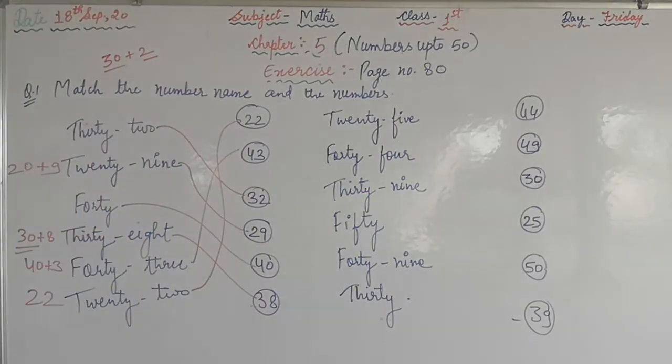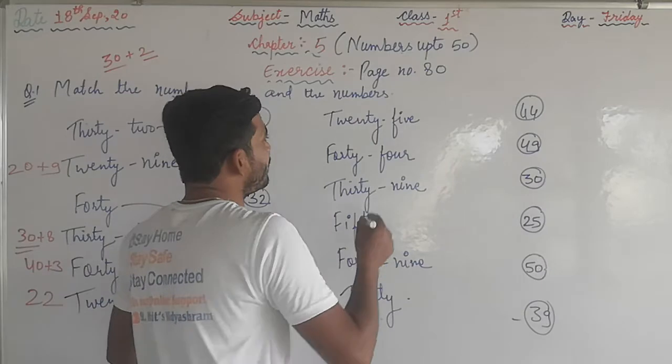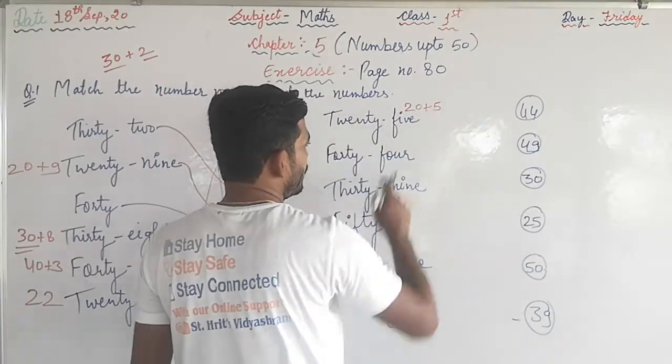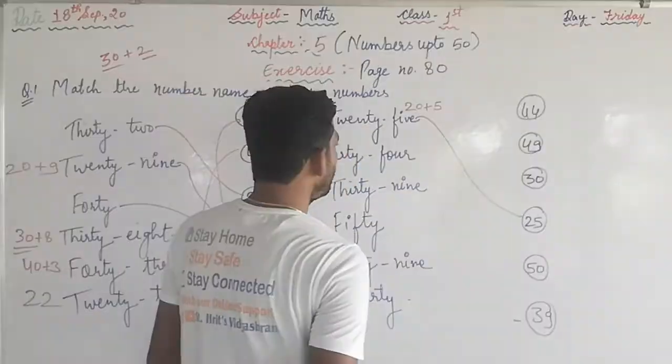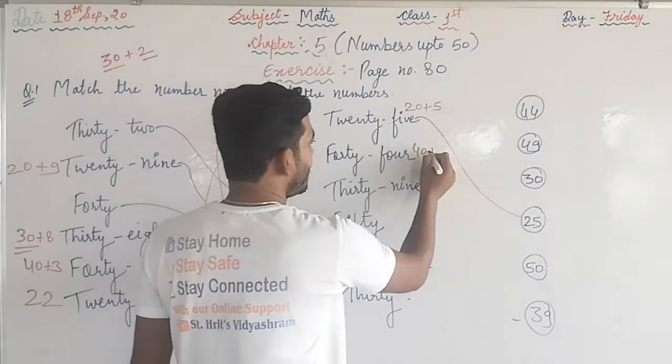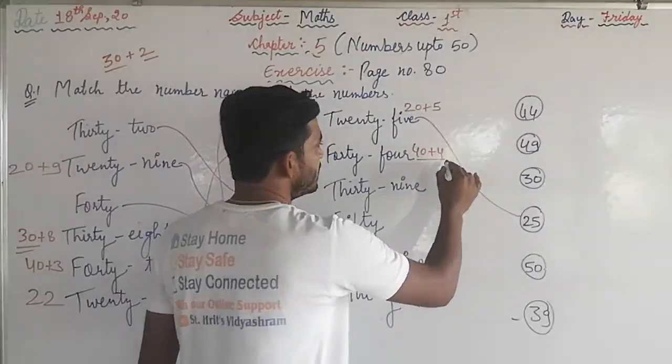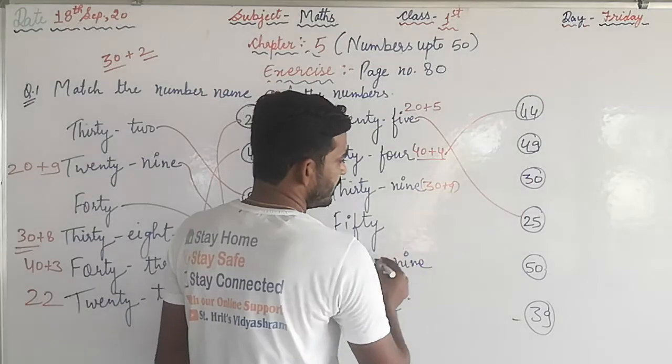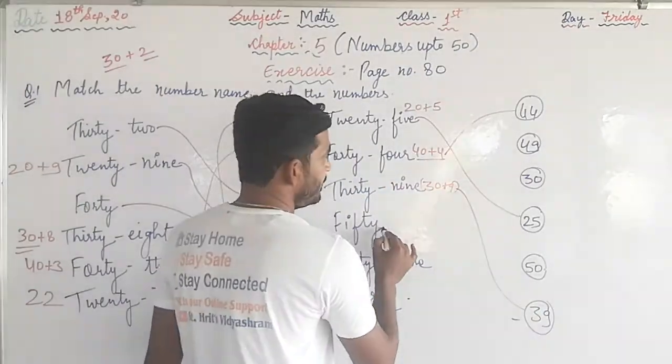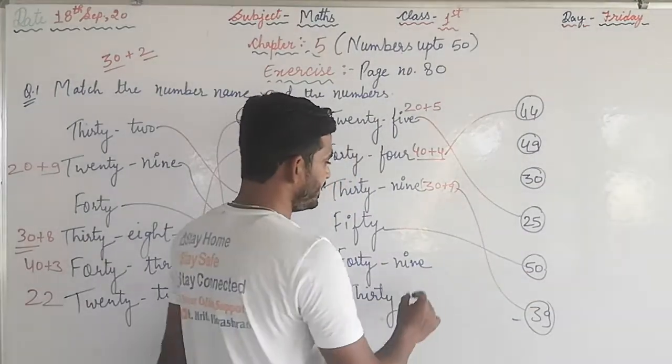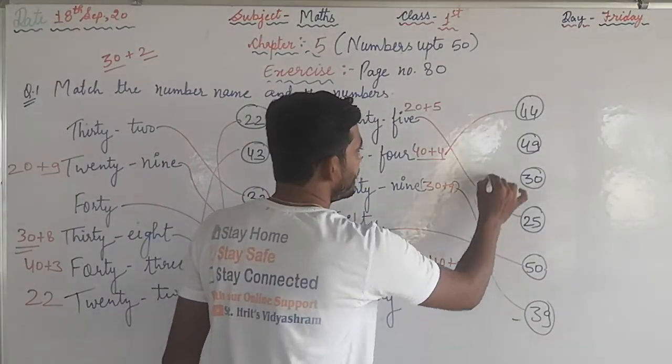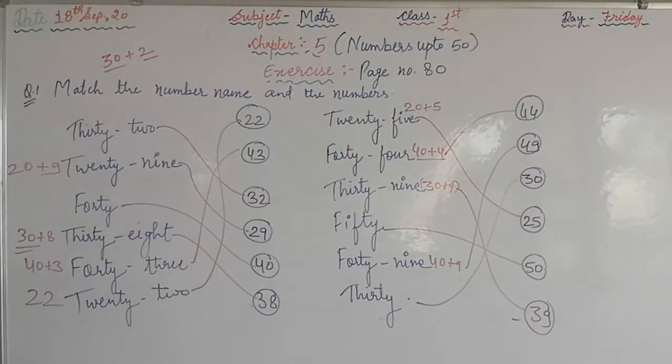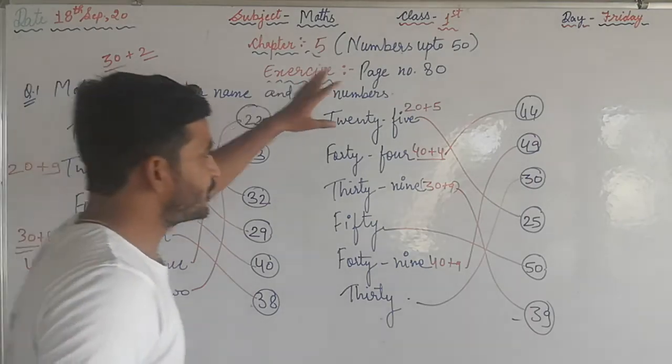Now see, 25 means 20 plus 5, where is 25? Here it is. Next, 44 means 40 and 4, where is 44? Here it is. 39 means 30 plus 9, here it is 39. 50, here it is. 49 means 40 plus 9, here it is 49. 30, here it is 30.